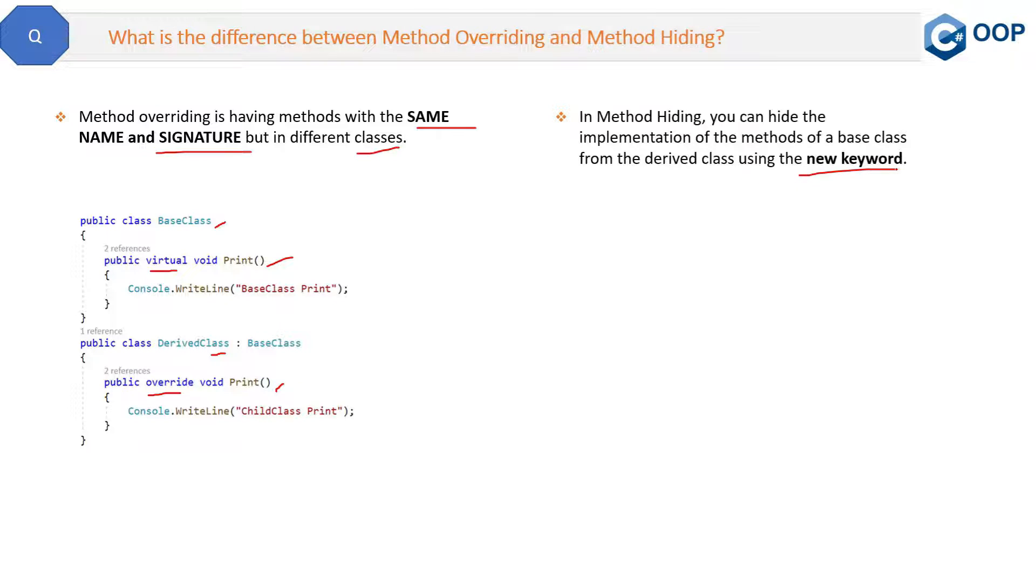Let me also show you the code here. If you see, we have again the same method name in the base class and in the derived class. The method name is print. This is present in the base class and the derived class also.